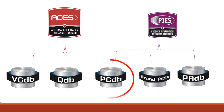The third database supporting ACEs is the PCDB — the product classifications, or the part type assignment. This database defines the category that our parts fit into, and it's central to the exchange of electronic catalog data and the proper classification and organization of each part type. This is also important when creating your own category tree for an e-commerce site or the like.